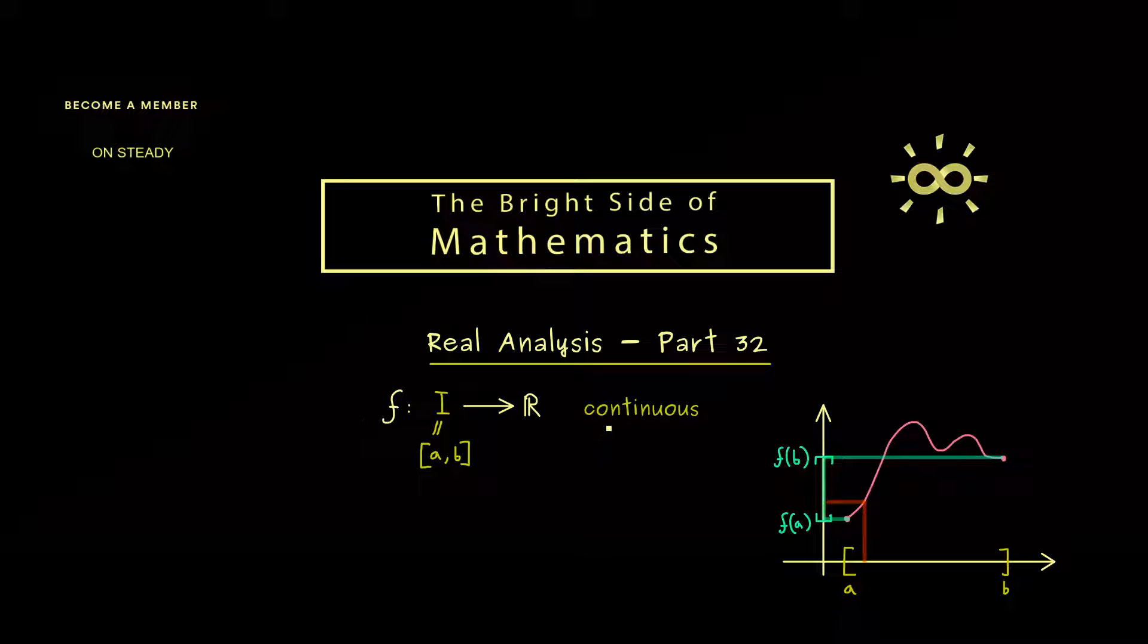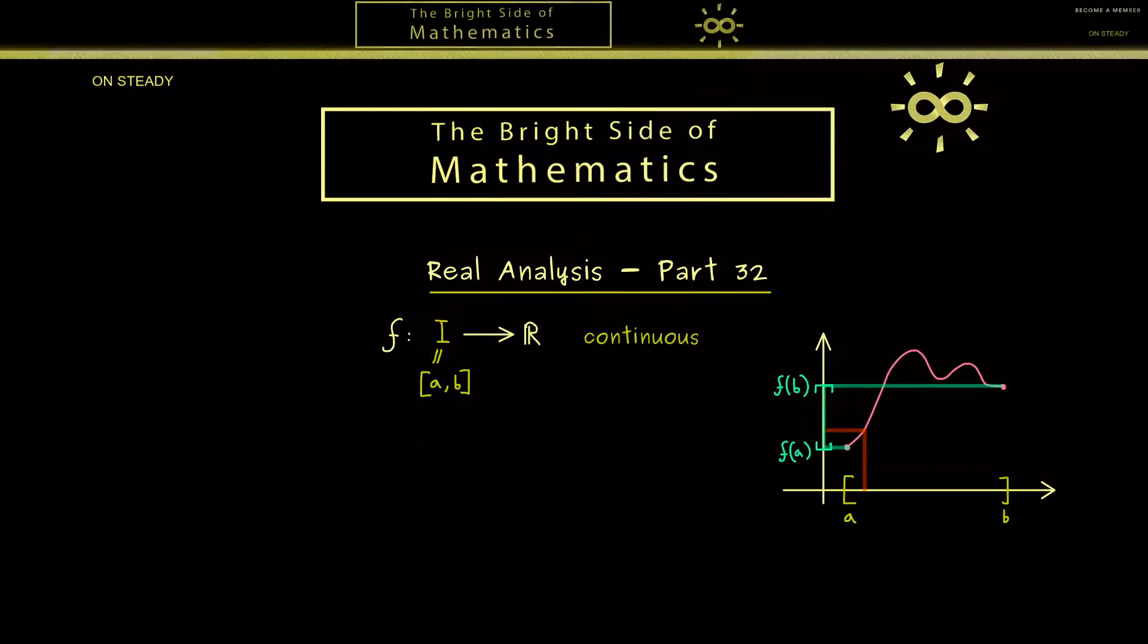The function simply cannot escape here if it starts here and ends there, because it's continuous and cannot make any jumps. Therefore the intermediate value theorem gives meaning to the sentence that the graph of a continuous function can be drawn in one stroke. Let's formulate this nice theorem.